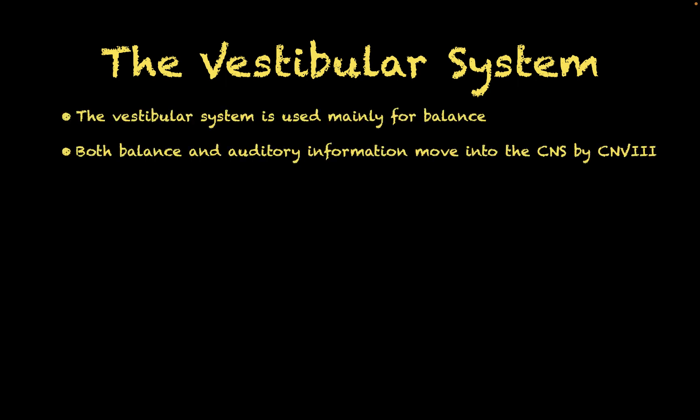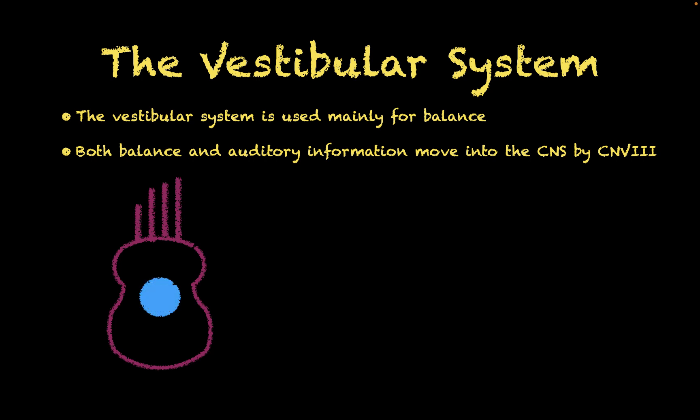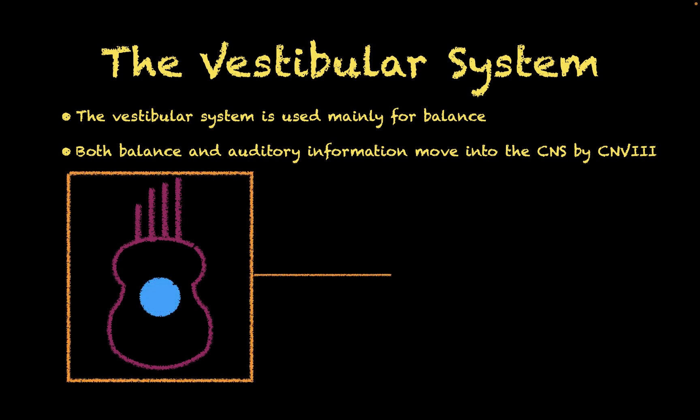So what is the vestibular system used for? The vestibular system is mainly going to be used for balance. And it's important to realize that both balance and auditory information both move into the central nervous system by cranial nerve number eight.